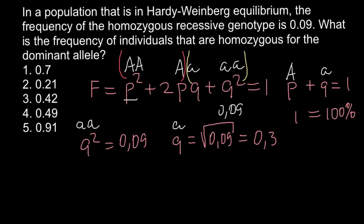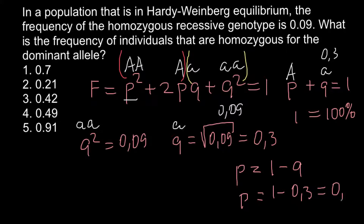Since we know the frequency of the recessive allele Q is 0.3, we can easily find the frequency of the dominant allele P using the formula. We rearrange it so P equals 1 minus Q. Therefore P equals 1 minus 0.3, so P equals 0.7. This is the frequency of the dominant allele A.